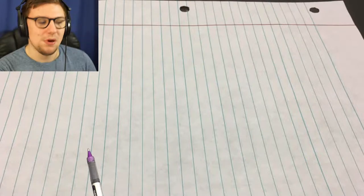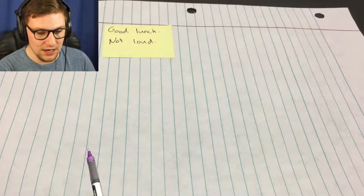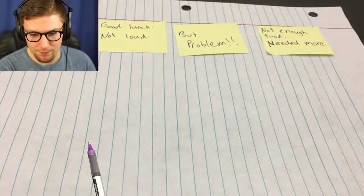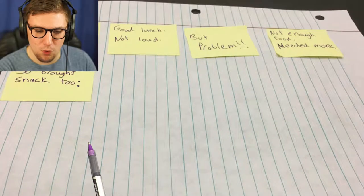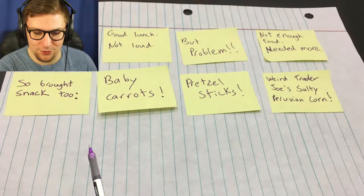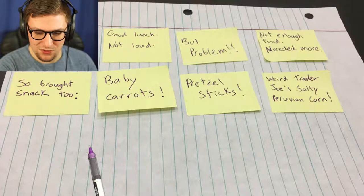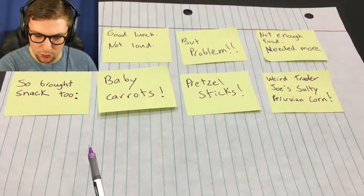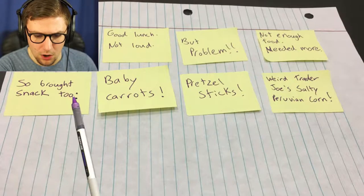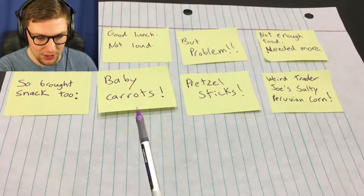Got a peanut butter jelly sandwich. Good lunch. Not loud. But problem. Not enough food. Needed more. So bought a snack too. Baby carrots. Pretzel sticks. Weird Trader Joe's salty Peruvian corn. Oh, I get to choose. What snack do I want to bring? I like me some pretzels.